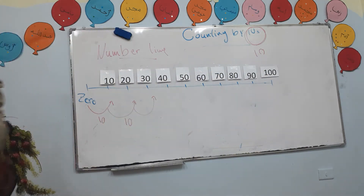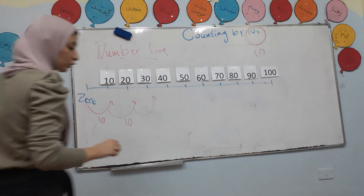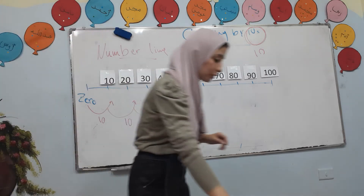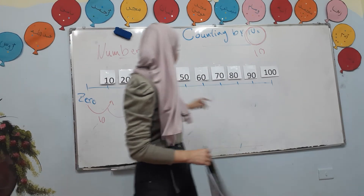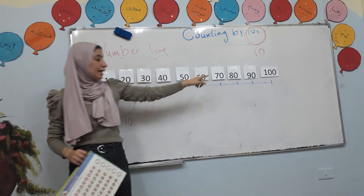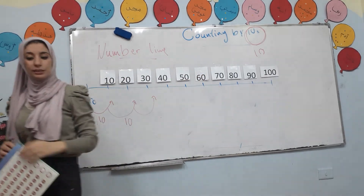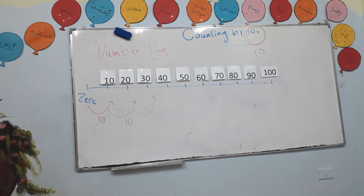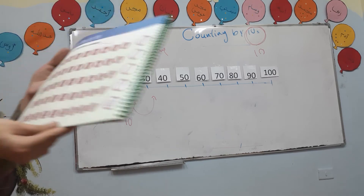Each time I add 10 more: 10, 20, 30, 40, 50, 60, 70, 80, 90, and 100. Now please open our book at page number 20.